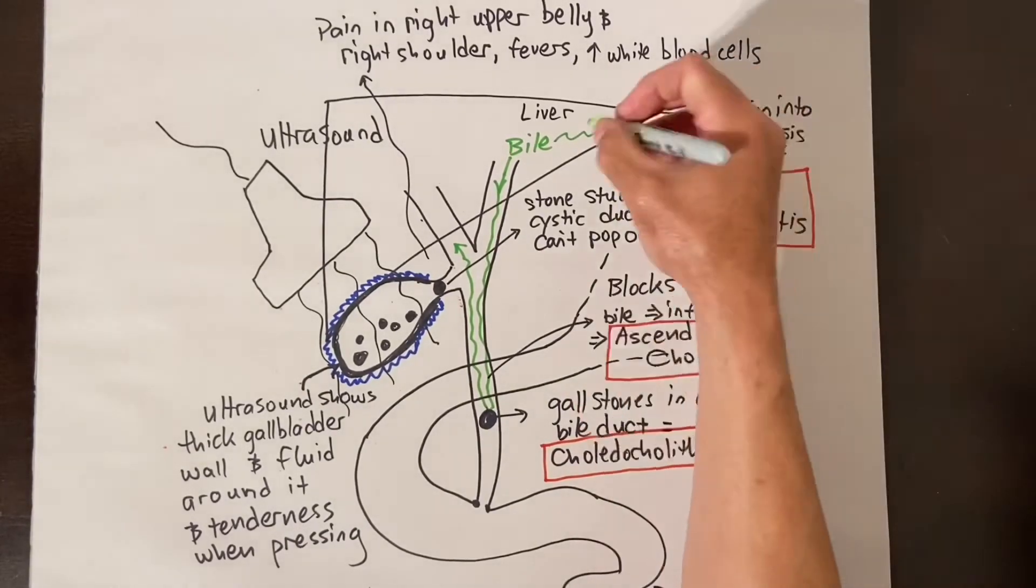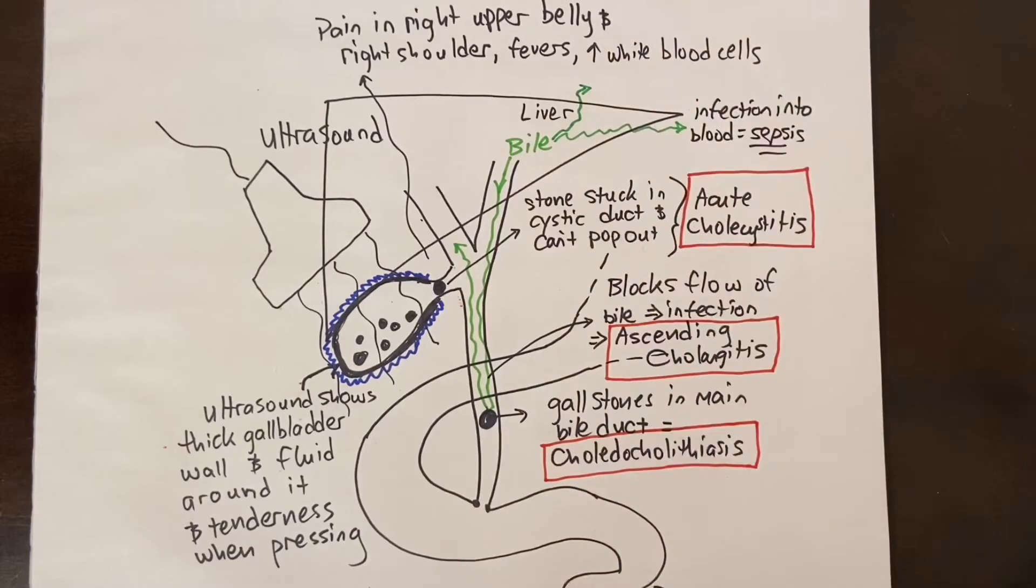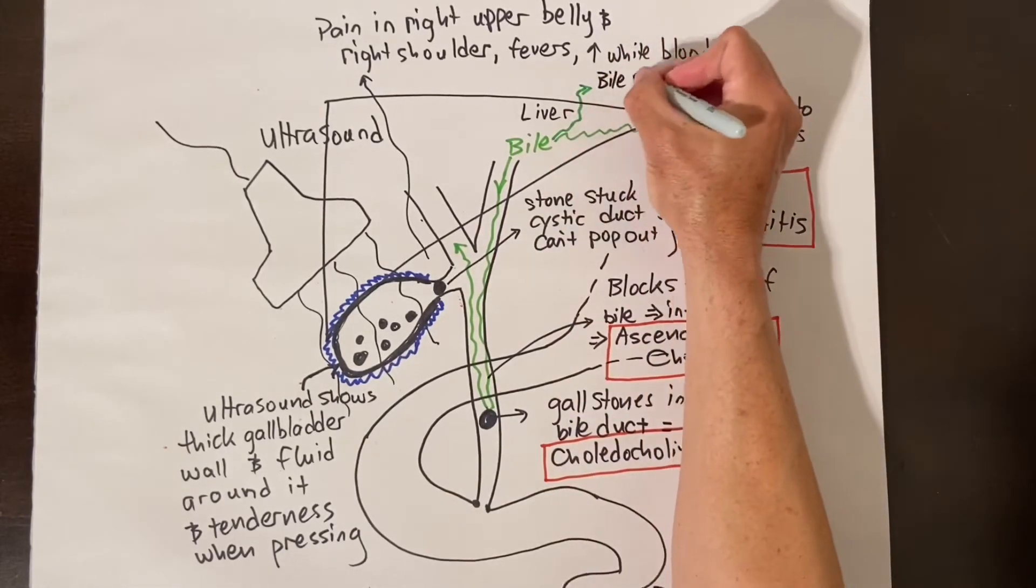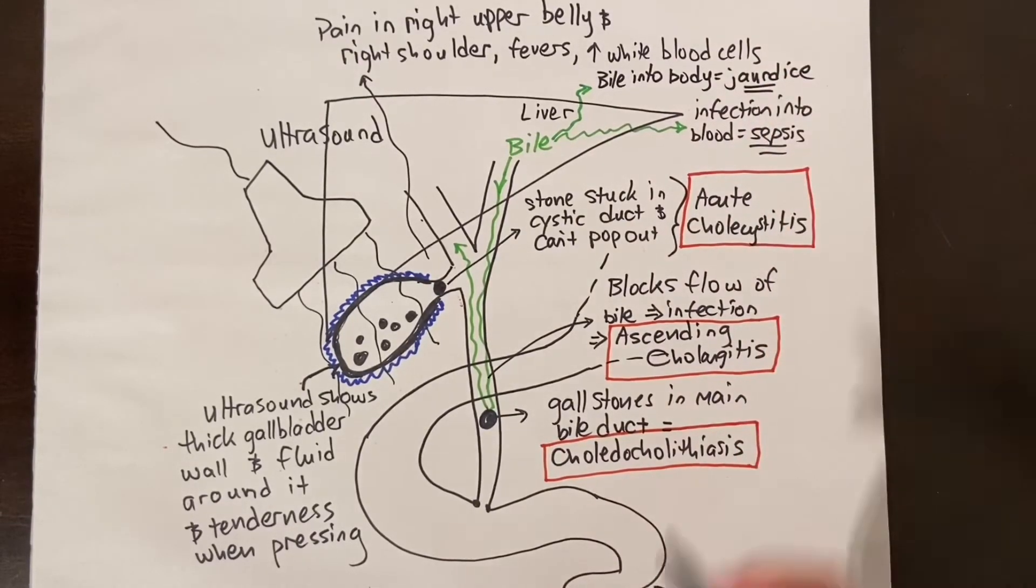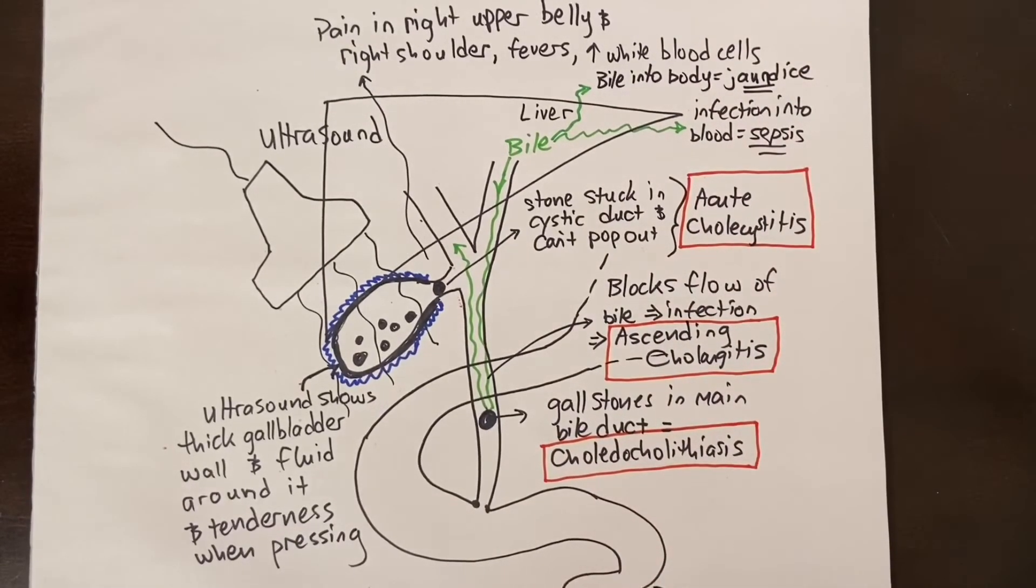Infections and stones just in the gallbladder itself do not cause jaundice but if the bile drainage from the liver is blocked by a stone in the main bile duct then this can cause jaundice which is what happens when bile backs up into the liver and then out into the blood and makes your skin and eyes look yellow.